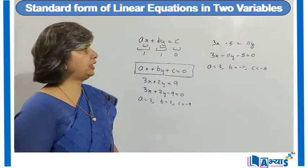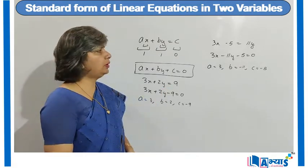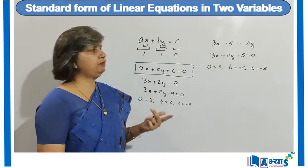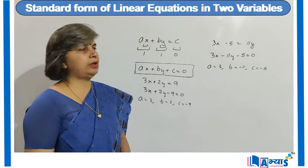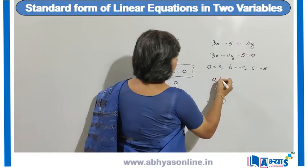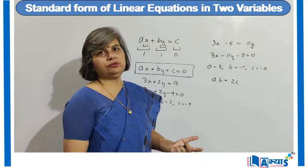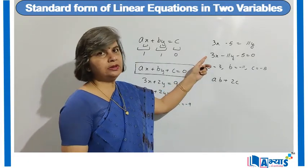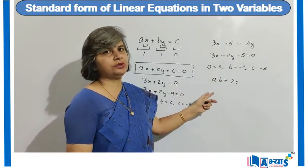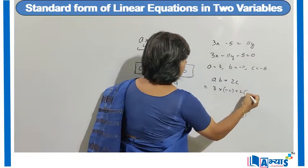This is the type of question that can be asked. We may be given an expression in terms of A, B, and C and asked to find its value. For example, given the equation 3x minus 5 is equal to 11y, we are asked to find the value of AB plus 2C. We first convert to standard form, identify A, B, and C, then substitute: A is replaced with 3 and B with minus 11, giving AB as 3 times minus 11, plus 2 times C which is minus 5.